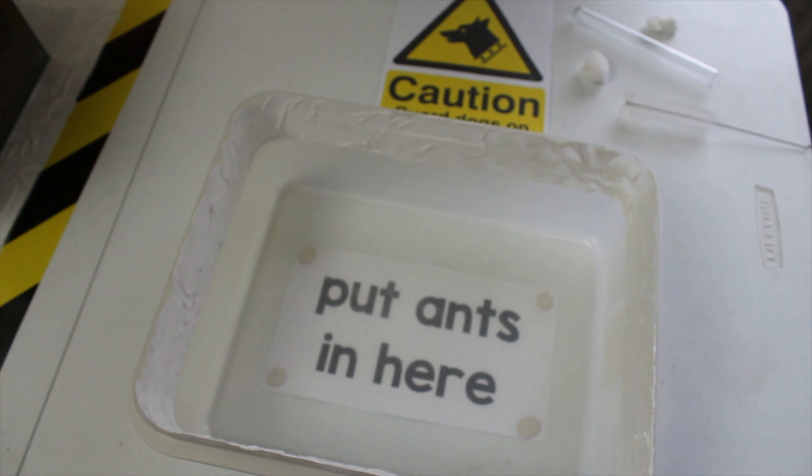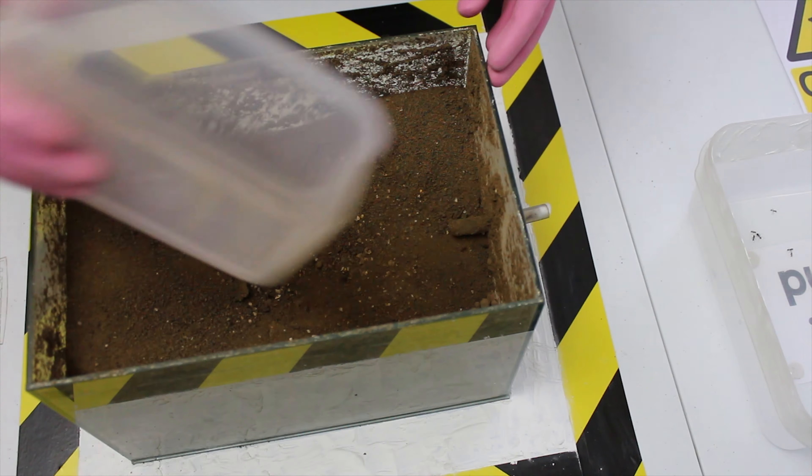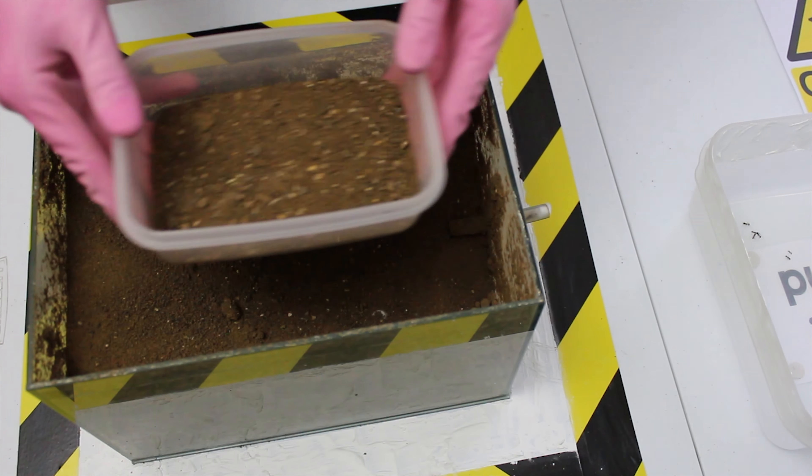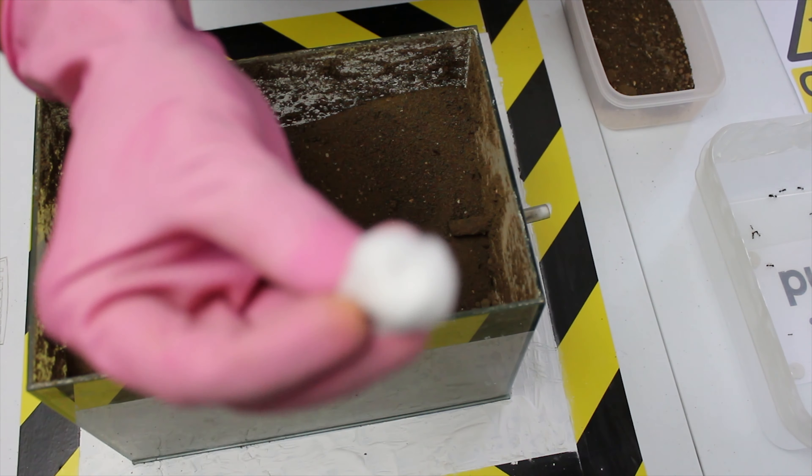For this next part, I have got an additional plastic container, where I will scoop the ants and dirt, then ant by ant, I will place them into the larger container with the anti-ant formula. Okay, let's do this.